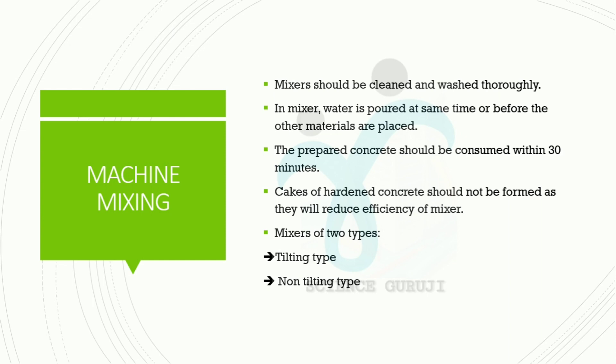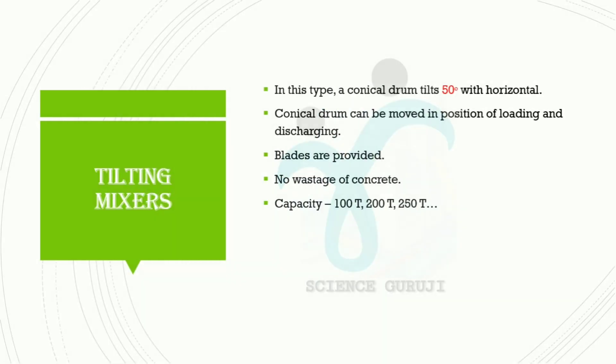Mixer types: tilting type and non-tilting type. In the tilting type, a conical drum tilts at 50 degrees with the horizontal. The conical drum can be moved to the positions of loading and discharging, and blades are provided. Tilting mixers have no wastage of concrete. Capacity is 100T, 200T, and 250T.